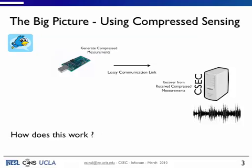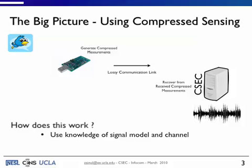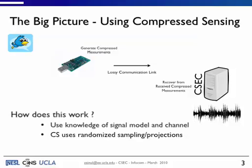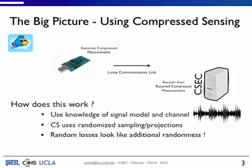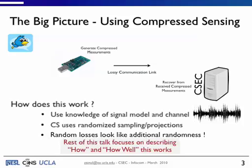So the question is, how does this work? So here we use the knowledge of the signal and of the channel. And so that's why there's no magic. We're using more information. We're using more knowledge to do this. Compressed sensing uses randomized sampling or randomized projections. And so what happens is that the random losses in the channel actually look like additional randomness within the sampling process. So that's really the intuition or the trick behind why this works. And the rest of this talk is going to focus on how this works and how well this works.